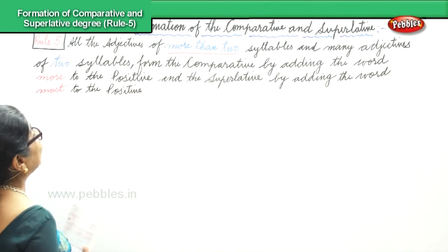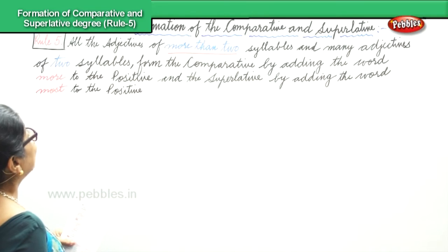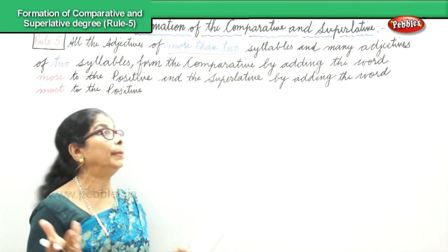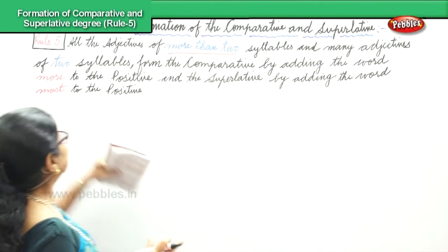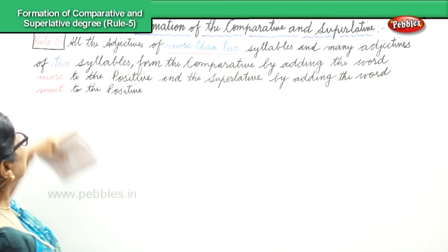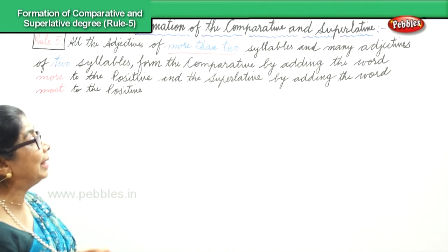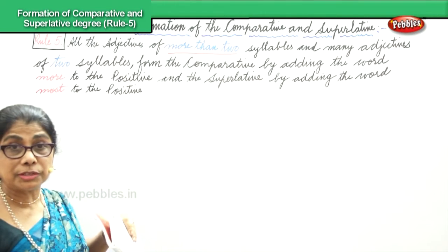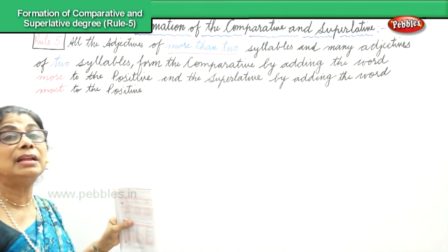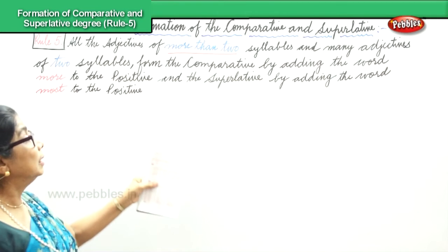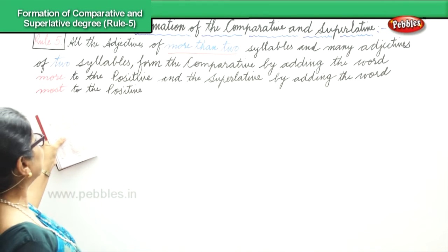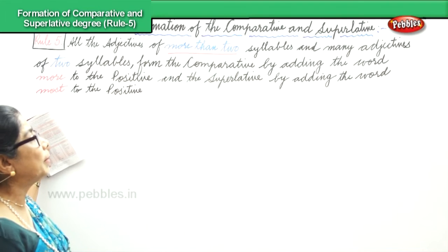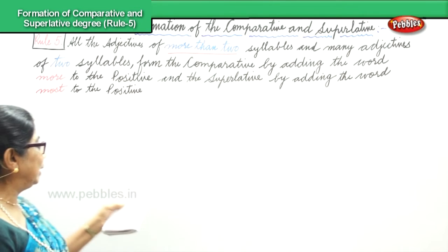So what does rule number five say? All adjectives of more than two syllables, and many adjectives of two syllables, form the comparative by adding the word 'more' to the positive, and 'most' to the positive to form the comparative and superlative degree.